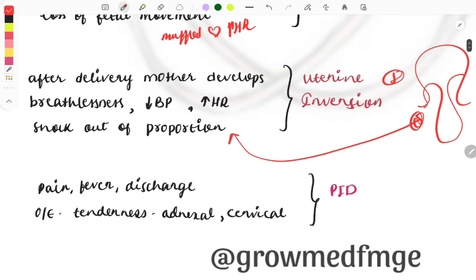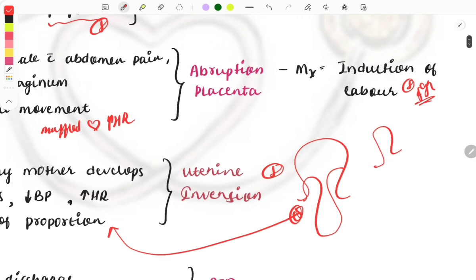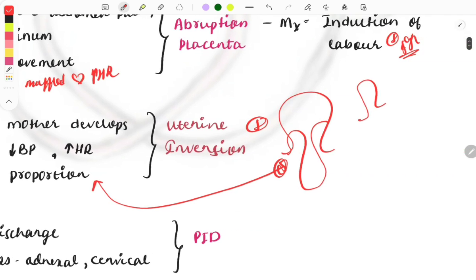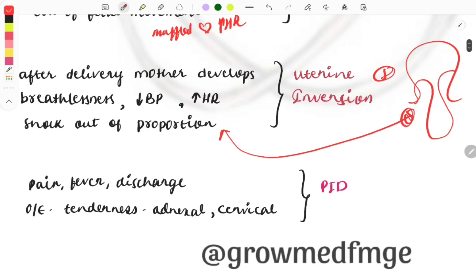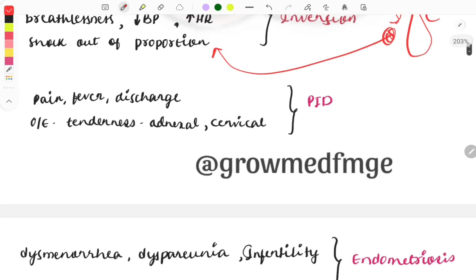This is the only condition that may lead to immediate shock in the patient - shock out of proportion. Postpartum hemorrhage also causes shock, but in that there is sudden very large blood loss. In case of uterine inversion, at a time very large blood loss occurs, which causes the shock.